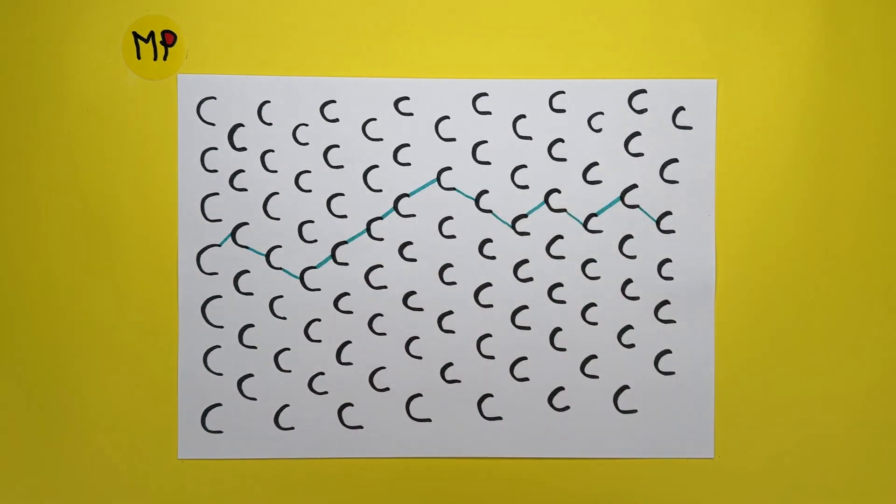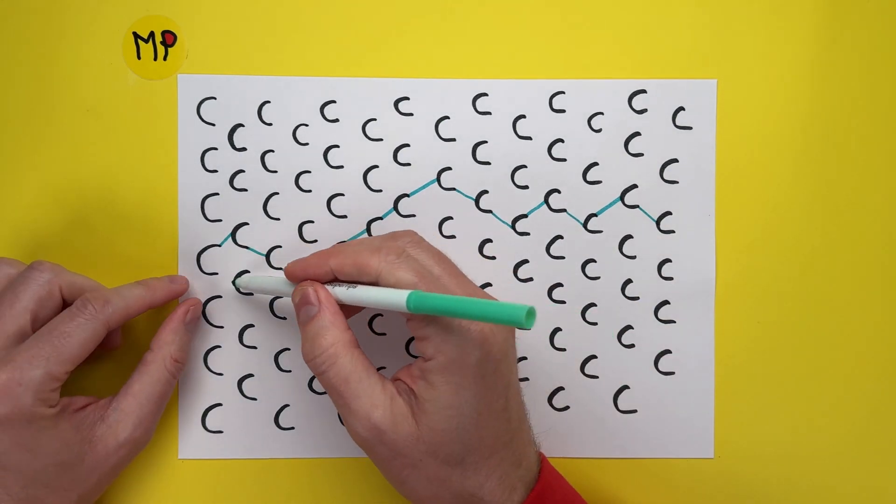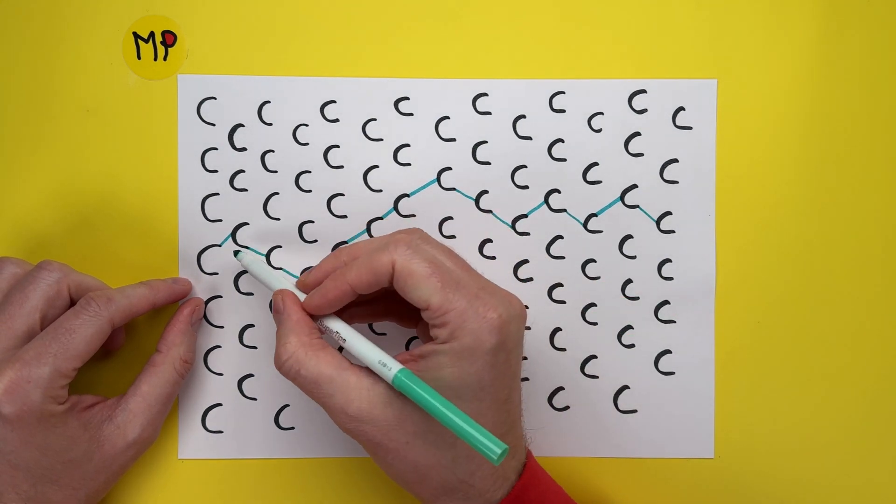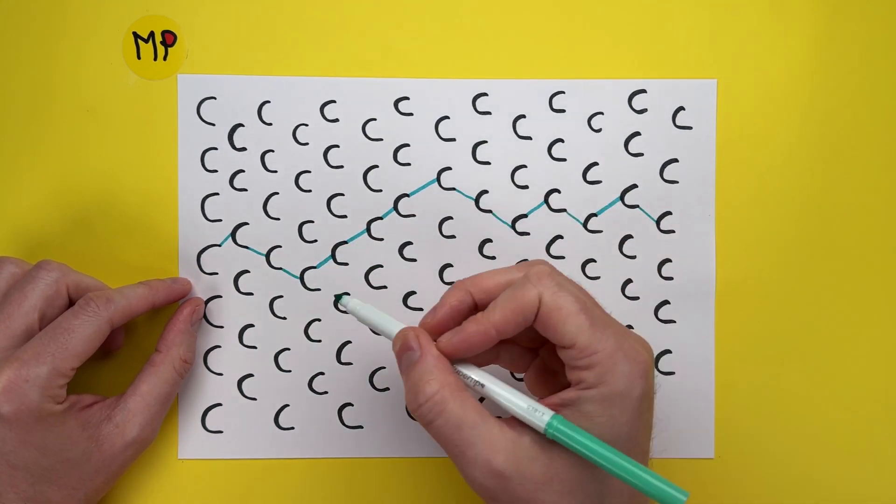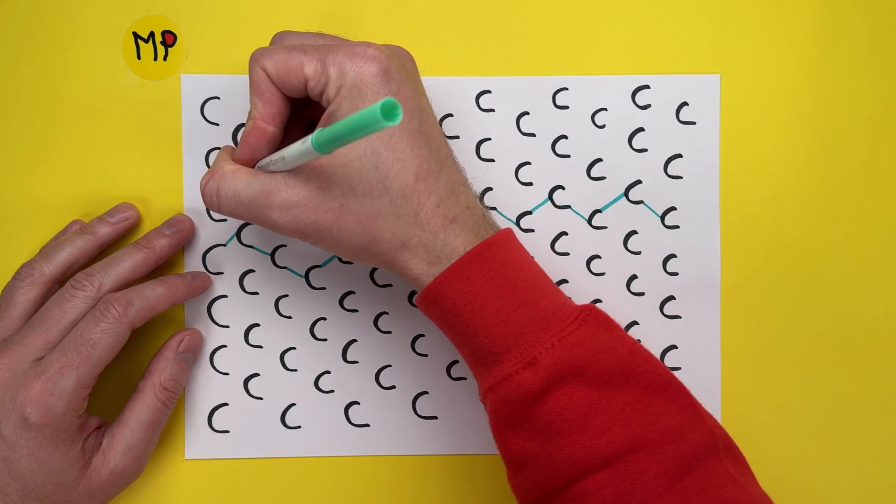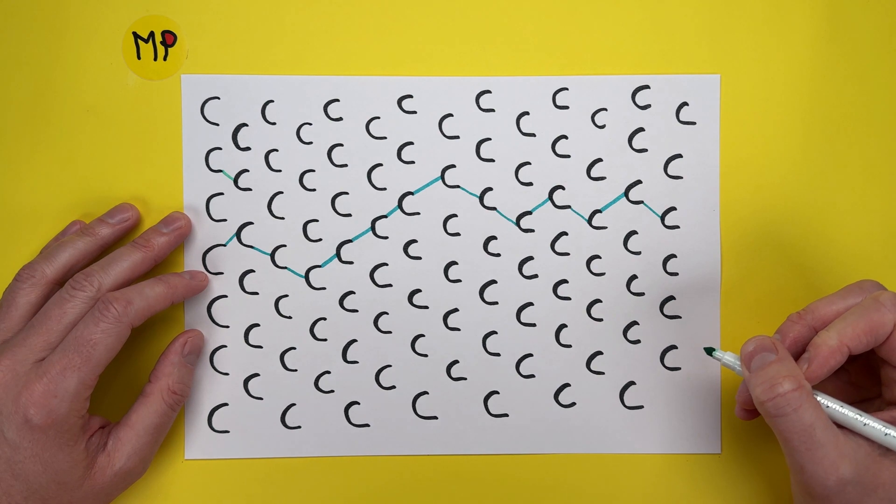So there we are. We've connected those C's together. This time we're going to connect our C's, but we're not going to create a single line. In fact, this is going to be the only one that connects. Let's connect some of these. So look, I've connected those two.